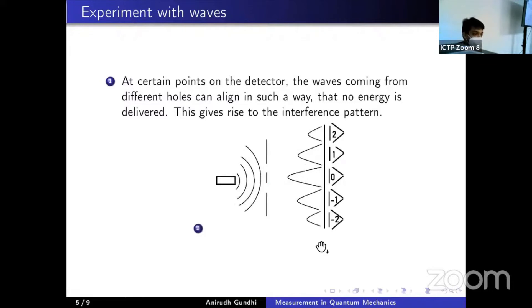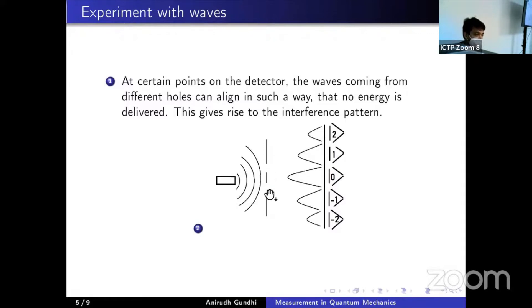The interference pattern on the detector screen shows maximum intensity at position zero. Between zero and one — say at 0.5 — the intensity is zero. Then there are local maxima at positions one and minus one, zero intensity again between one and two, and local maxima at plus and minus two. The reason for zero intensity at a point like 1.5 is that this point is closer to the top hole than the bottom hole, so the wave from the bottom hole must have left earlier. By the mechanism described, this leads to perfect cancellation of the waves and zero intensity recorded at that point.